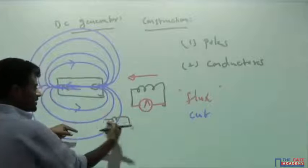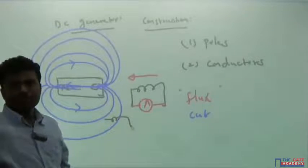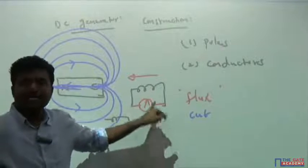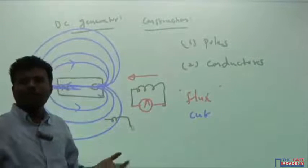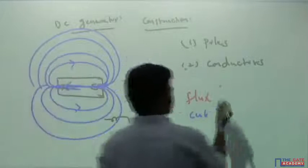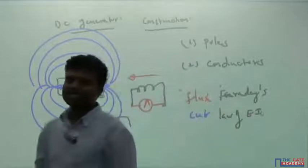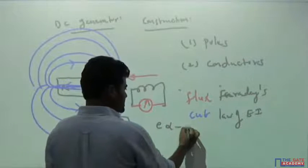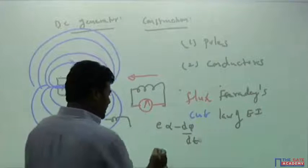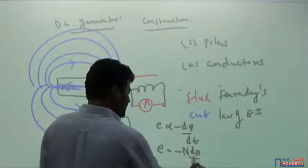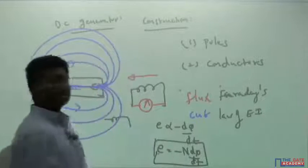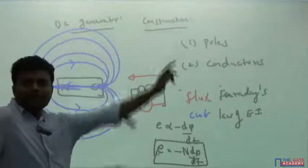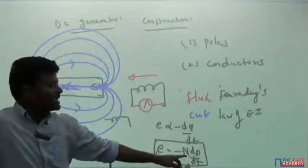As the conductor moves toward or away from the magnetic field, the number of flux lines cut changes. This change in flux induces an EMF — this is Faraday's Law of Electromagnetic Induction. In simple terms: the EMF induced in any conductor is directly proportional to minus dφ/dt, or written as e = −N dφ/dt. This is the EMF equation from Faraday's Law.